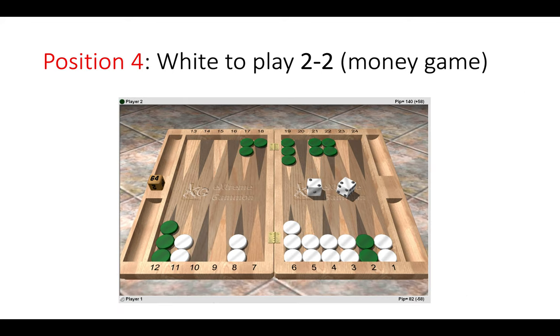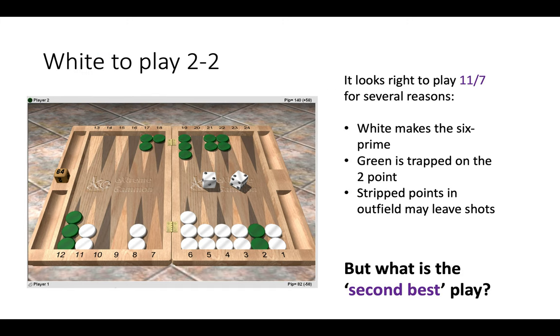And finally, position four. White to play double two. Now here it looks right to play 11 to 7 with both checkers, making the six-prime.